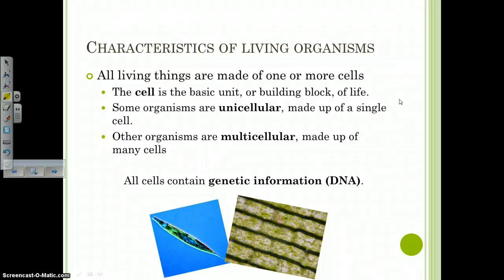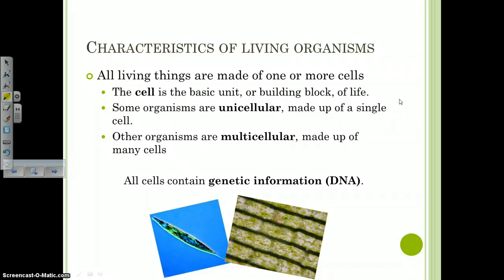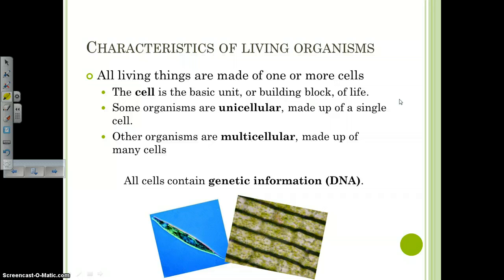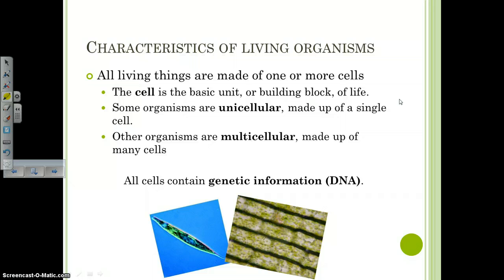I'm going to go through each of those characteristics one by one. Number one: all living things are made up of one or more cells. A cell is the basic unit, or the building block, of life. Some organisms exist as only one cell — we call those unicellular. Other organisms are made up of many cells — we call those multicellular. An example of a unicellular organism is the strep bacteria that gives you a sore throat. Multicellular organisms include plants and animals. All cells contain genetic information, most of the time DNA, sometimes RNA, and that genetic information carries the instructions for life.